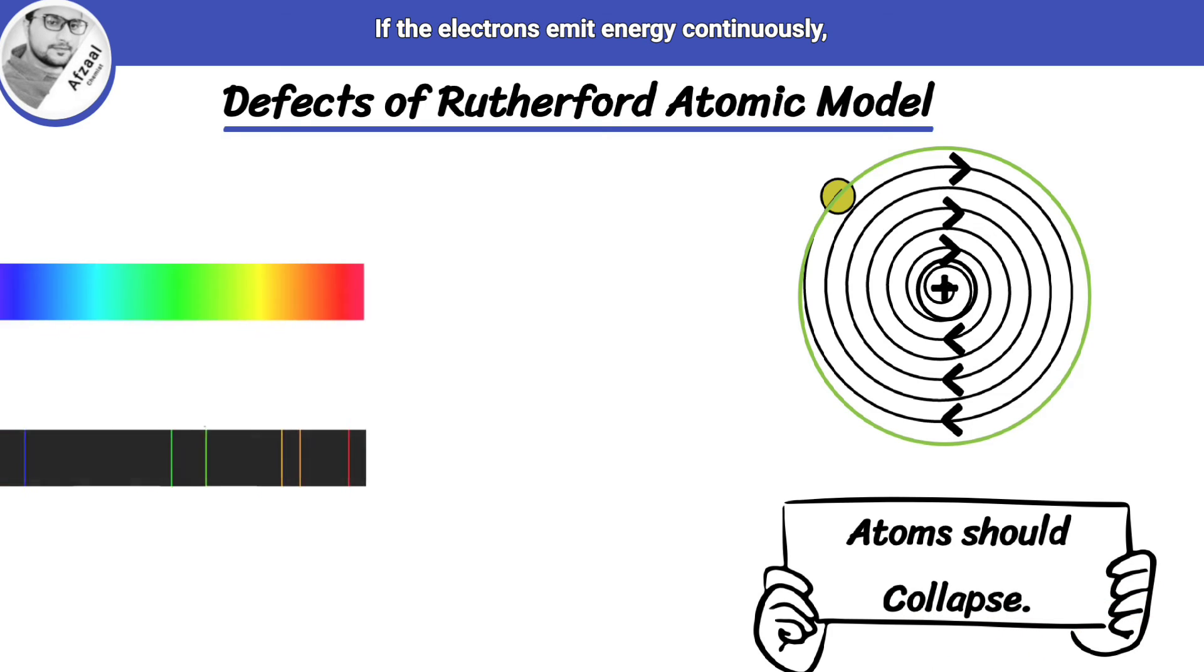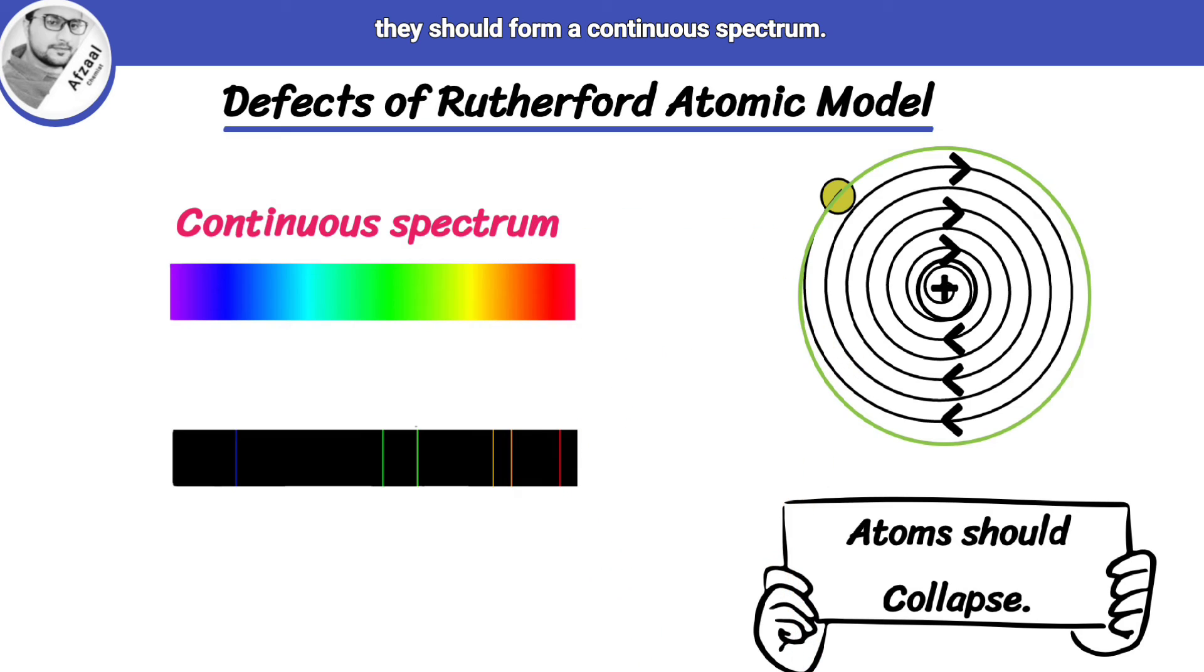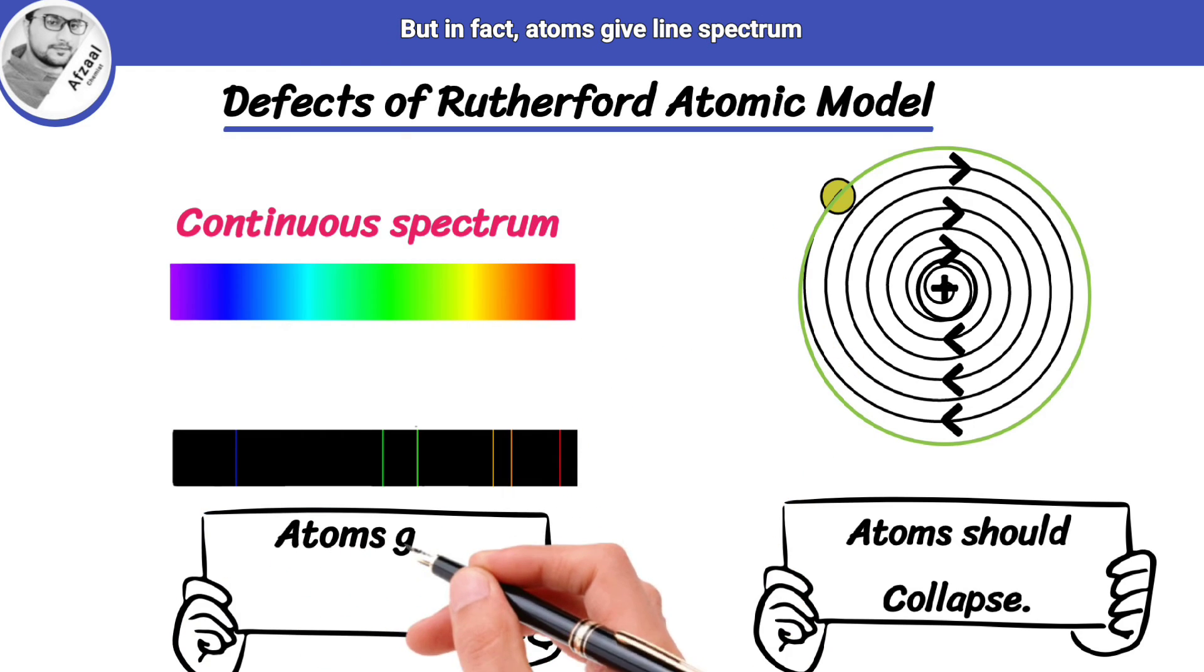If the electrons emit energy continuously, they should form a continuous spectrum. But in fact, atoms give line spectrum.